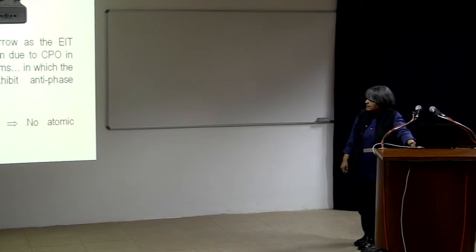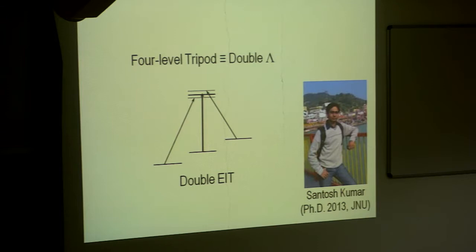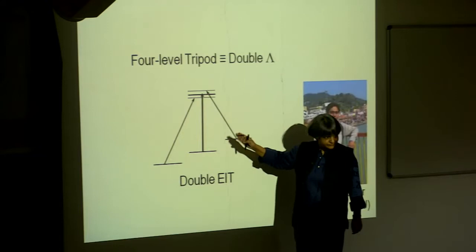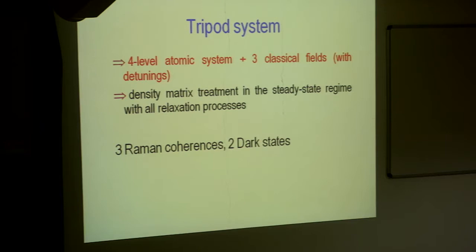It got us interested in looking at this transmission resonances of different kinds. I talked about phase related or coherence related such altered resonances. There could be even population related resonances. Having done a three level system, we got excited to talk about what looks like a tripod. It is like a double lambda if you like and a double EIT. It is much more complicated. You are talking about now a four level atomic system, three classical fields and so three Raman coherences, two dark states.